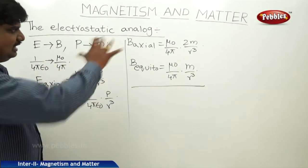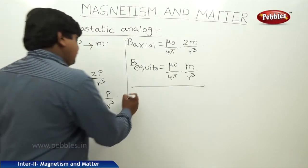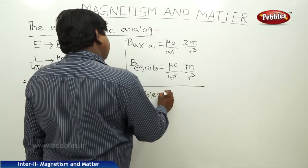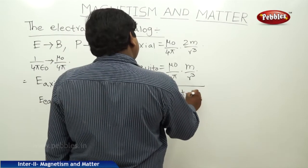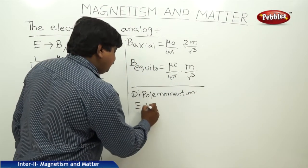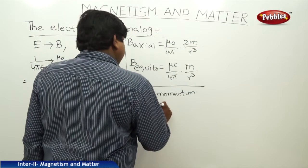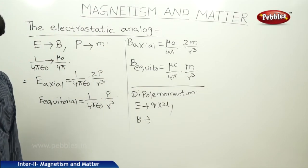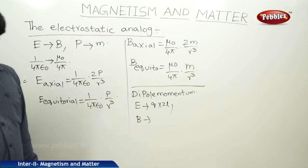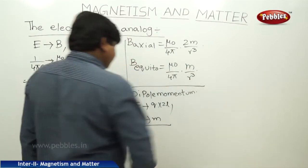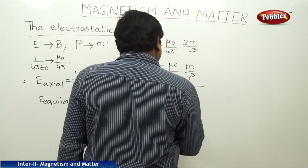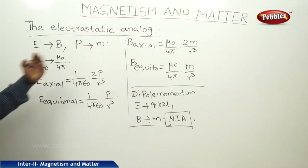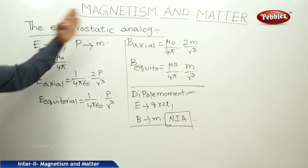So E becomes B, p becomes m, and 1 by 4 pi epsilon naught becomes mu naught by 4 pi. Regarding dipole momentum: in electric fields the dipole moment is q into 2l, but in magnetic fields the magnetic moment symbol is m and it equals NiA.